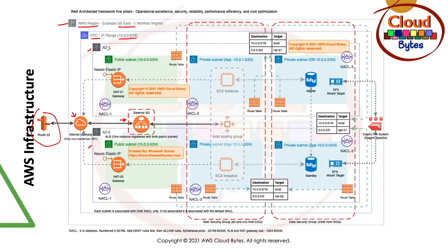Each VPC has one or more AZs. In our case, AZ1 has a total of three subnets — one public and two private — and AZ2 has a similar number. The public subnet contains a NAT gateway. The NAT gateway is required for any private subnet interaction — for example, if an EC2 instance sitting in the private subnet needs to talk to the internet or download something from it, it will go through the NAT gateway.